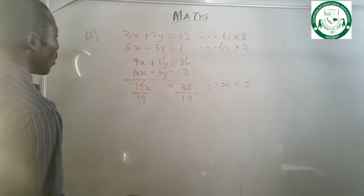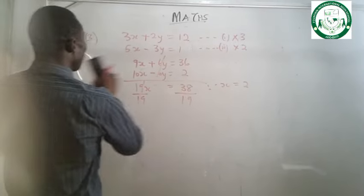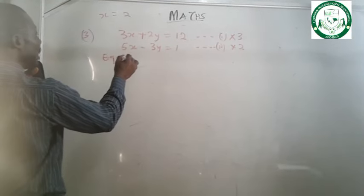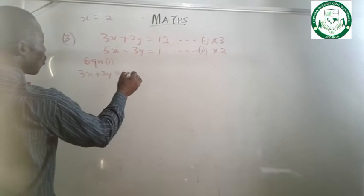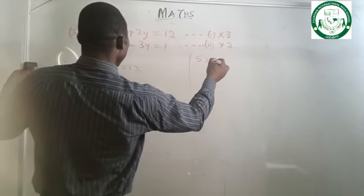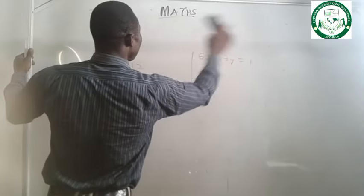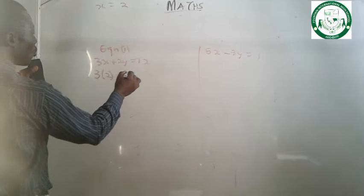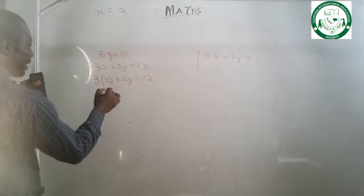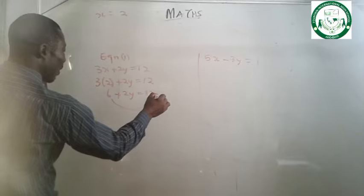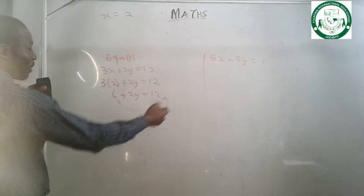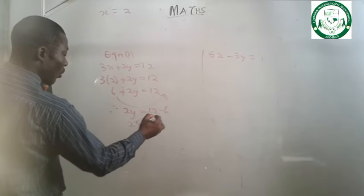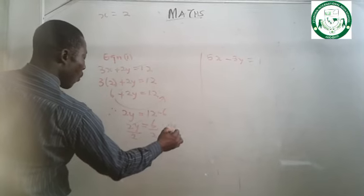Now let's substitute x equals to 2. Using equation 1: 3 times 2 plus 2y equals to 12, giving 6 plus 2y equals to 12. Collecting like terms: 2y equals to 12 minus 6, so 2y equals to 6. Dividing by 2, therefore y equals to 3.